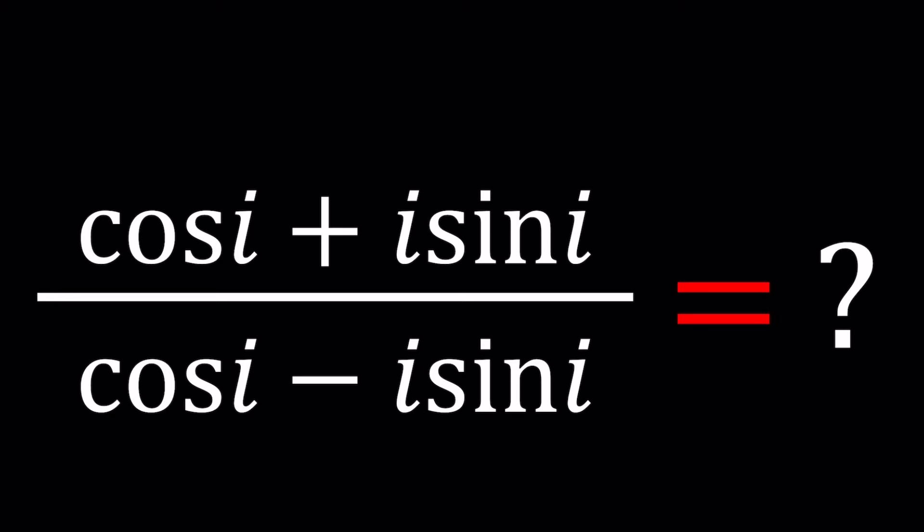There is a reason why I said that, you're going to notice when we got the answer. So we have cosine i plus i times sine i divided by cosine i minus i sine i. And I'll be presenting two approaches and let's start with the first one.